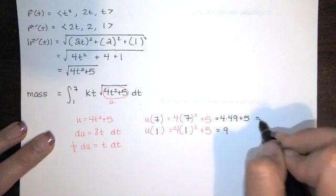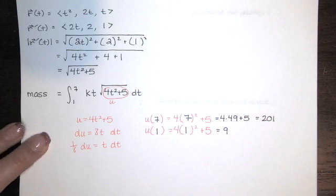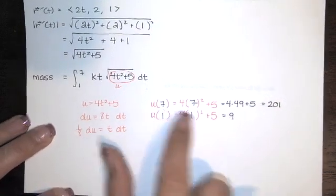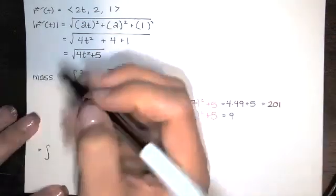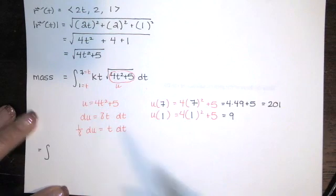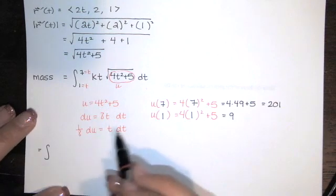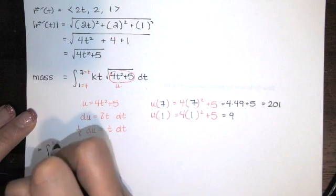So what's that? 196 plus 1 is 201. Okay. So those are my bounds. This says start at T equals 1 and end at T equals 7. Because I'm not going to write my integral in terms of U, I need to start with U equals 9 and end at U equals 201.